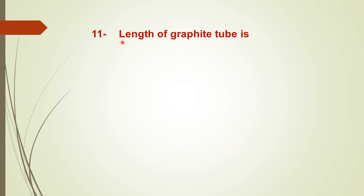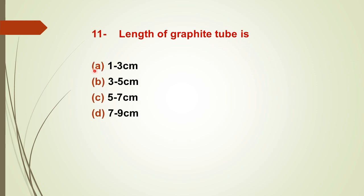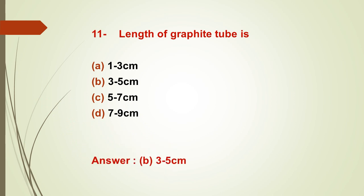Question number eleven: the length of the graphite tube is — options: A) 1–3 cm, B) 3–5 cm, C) 5–7 cm, D) 7–9 cm. The right answer is option B — 3 to 5 cm. The length of the graphite tube ranges from 3 to 5 cm.